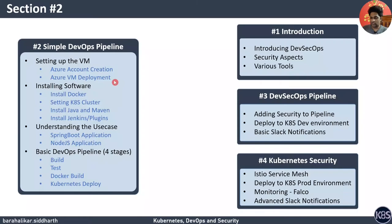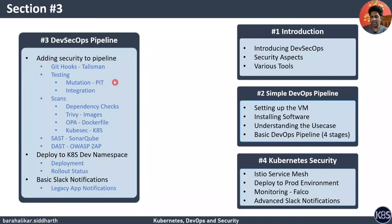We will end section two by creating a basic Jenkins pipeline consisting of four stages. In section three, we will start adding security to the existing pipeline. We will end this section by sending Jenkins build notifications using a simple Slack legacy application. By the end of section three, we will have a full-fledged Jenkins pipeline with security embedded — you can expect around 13 to 14 stages within the same pipeline.